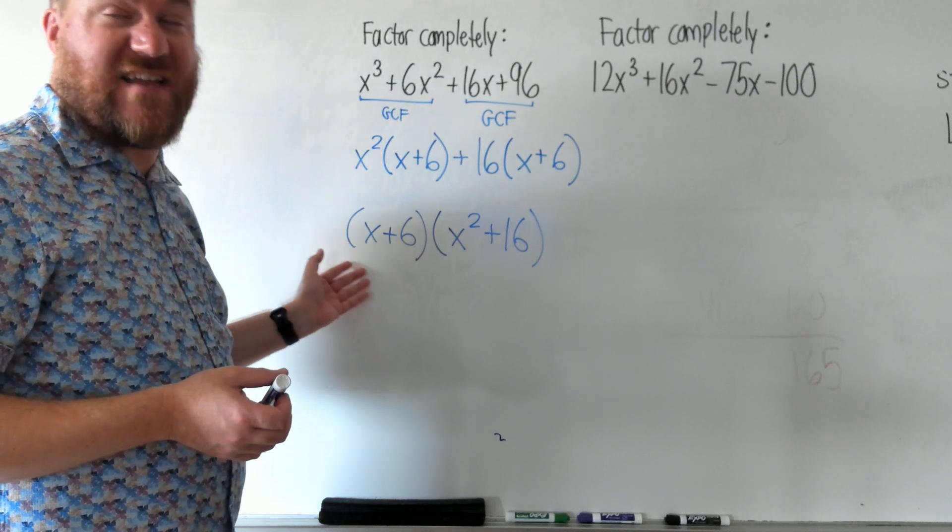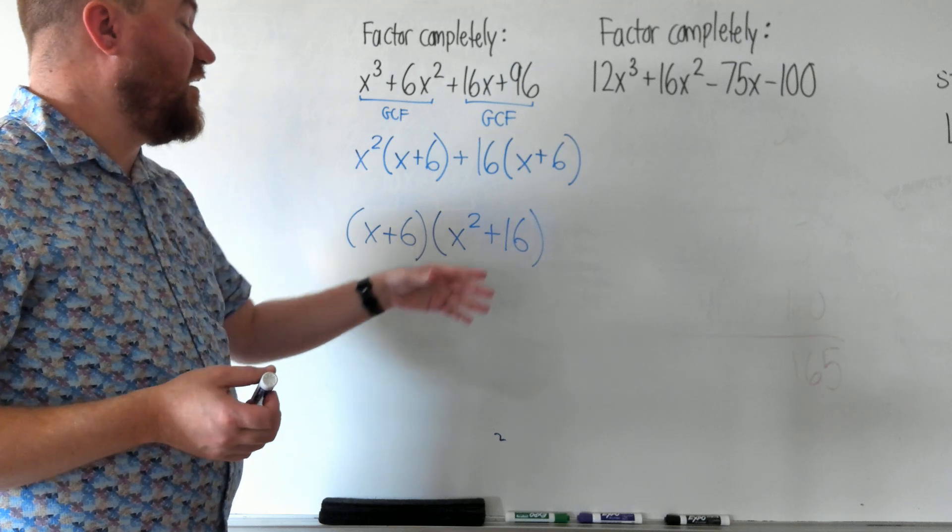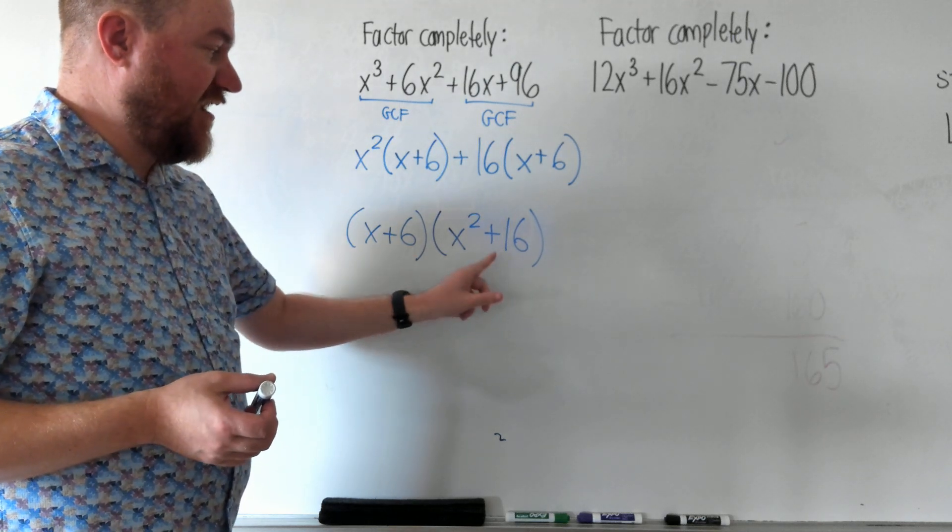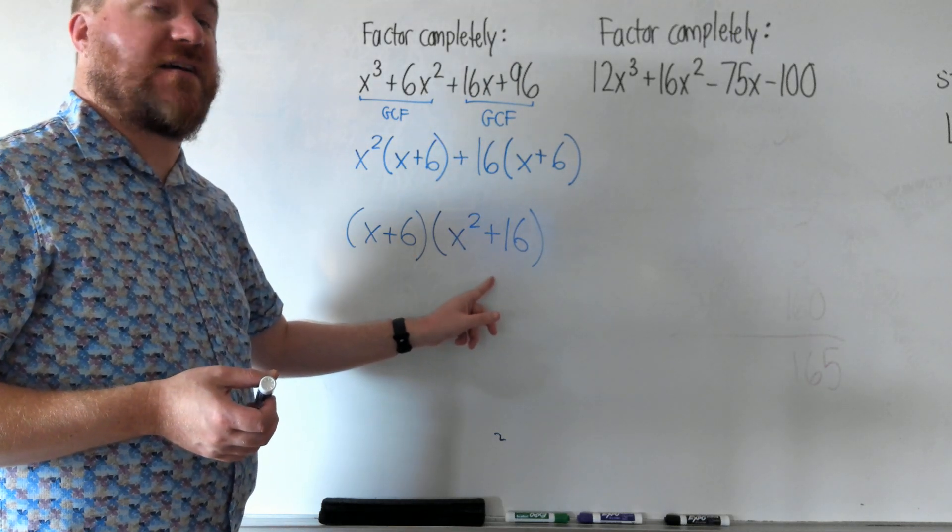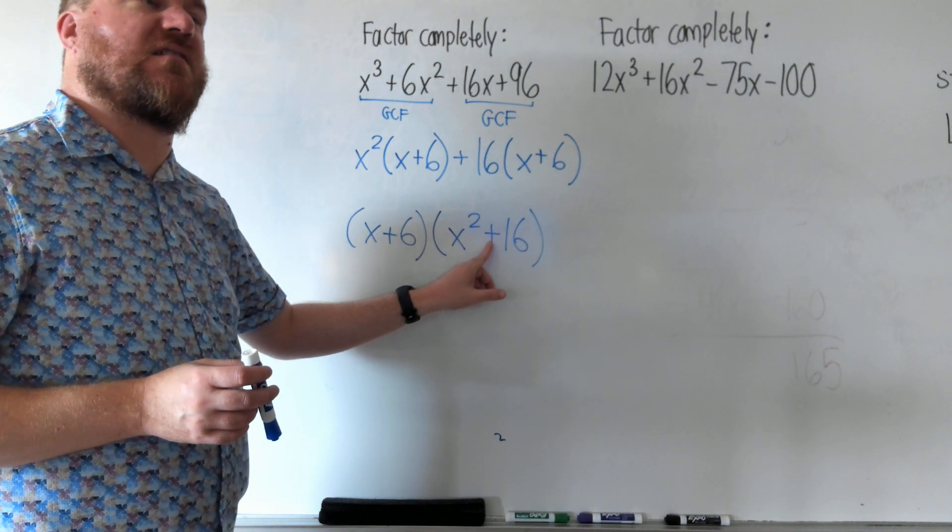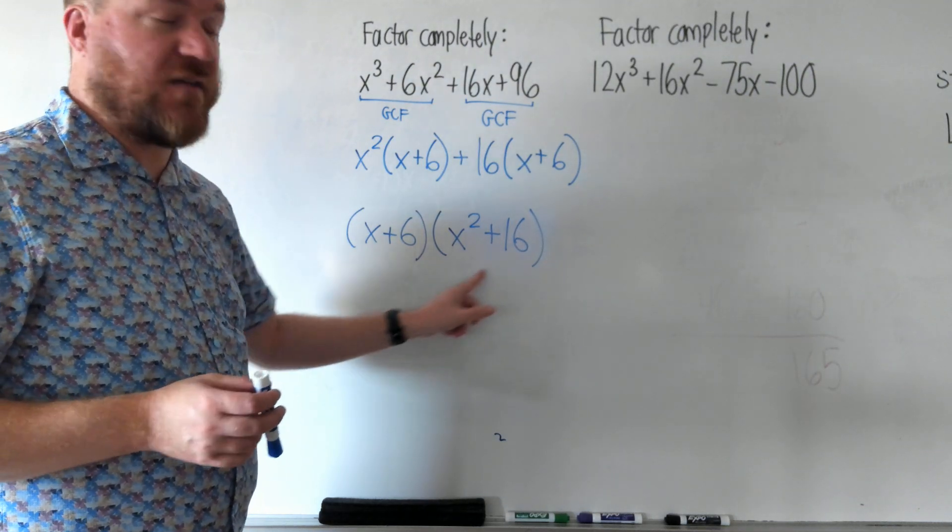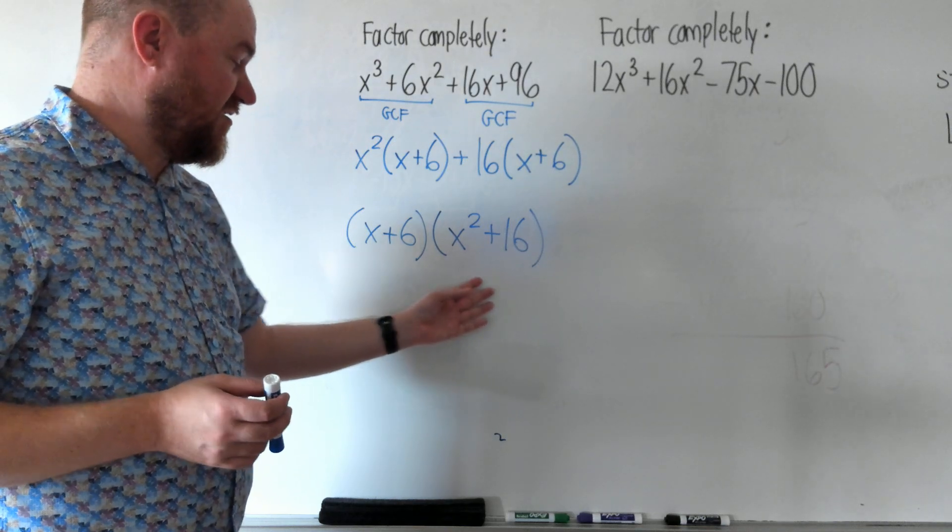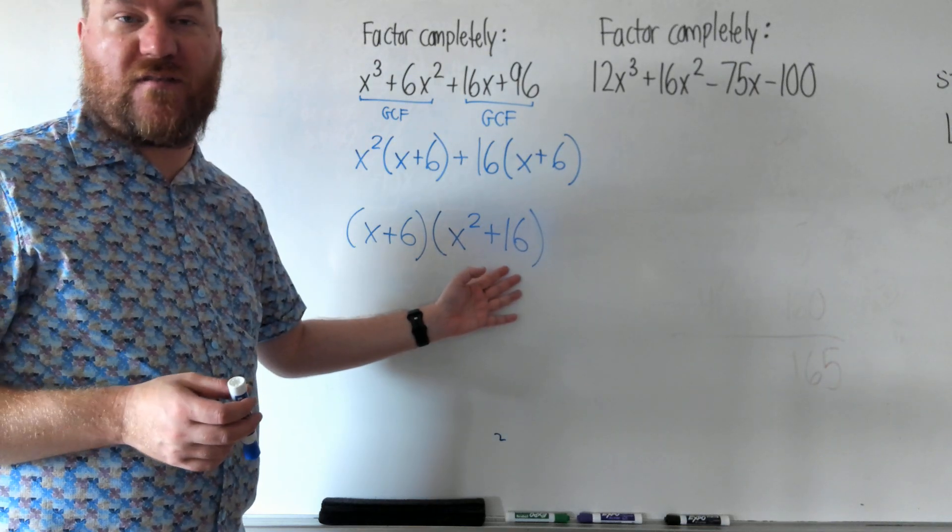x + 6 cannot be factored anymore. It's not a difference of two squares. Same with x² + 16. This looks like it could be factored. If that was a minus, we could use difference of two squares, but because it's a plus, there's nothing we can do to this. This is in simplest terms. So that's the answer for this first question.